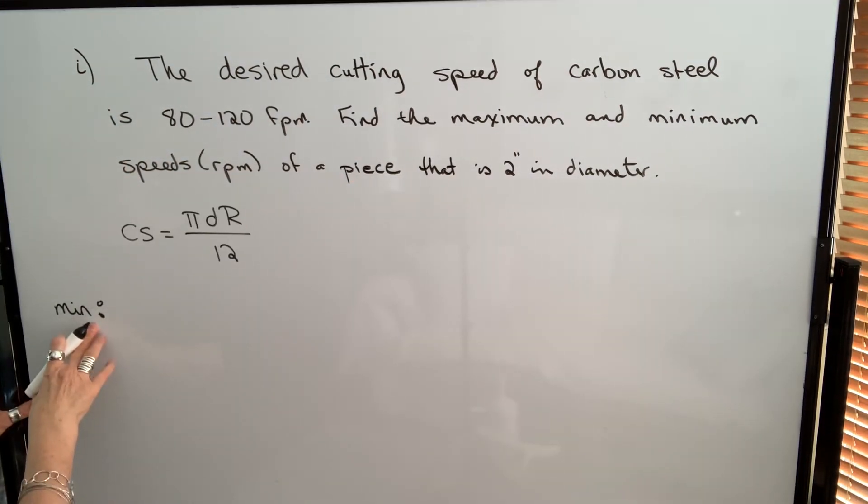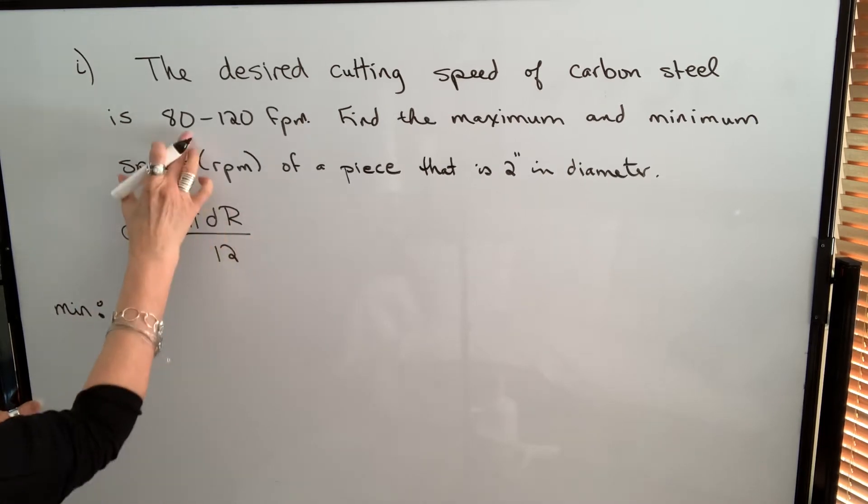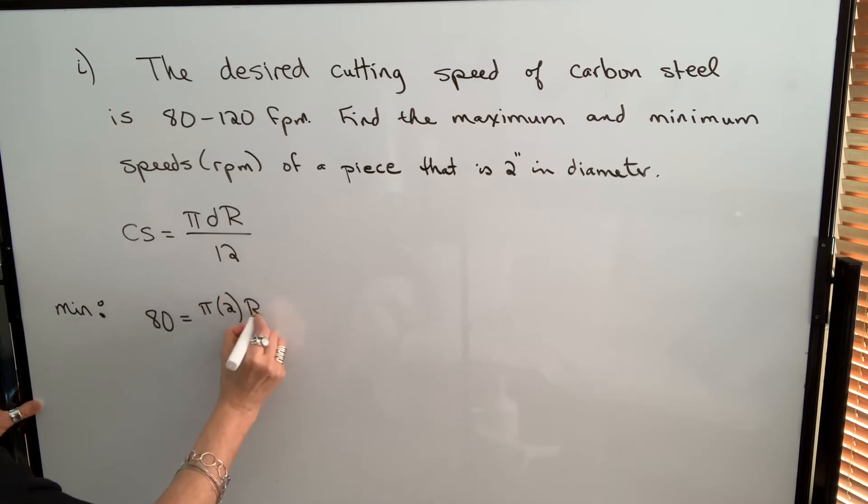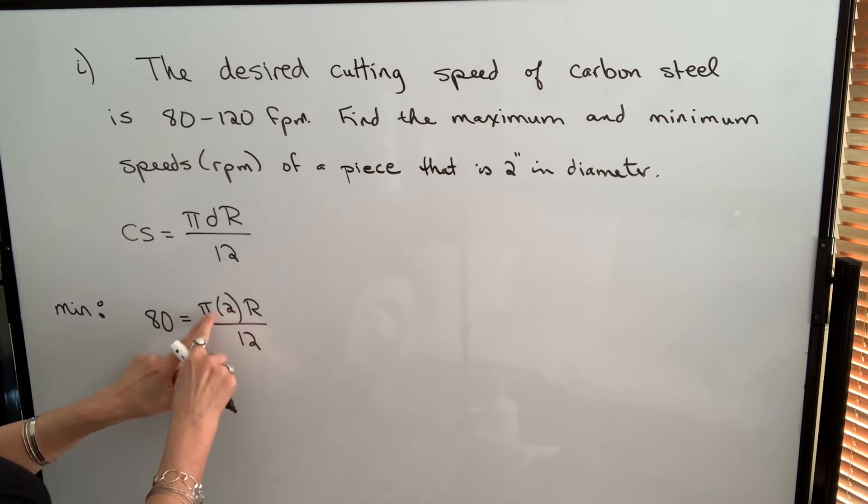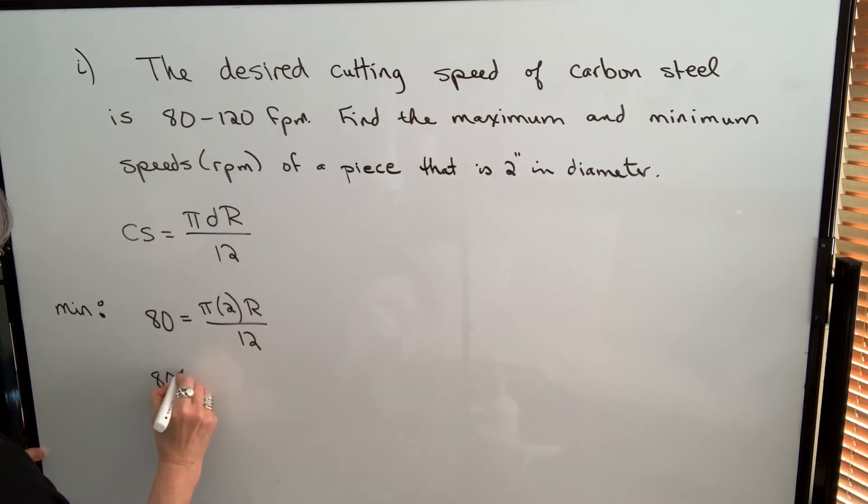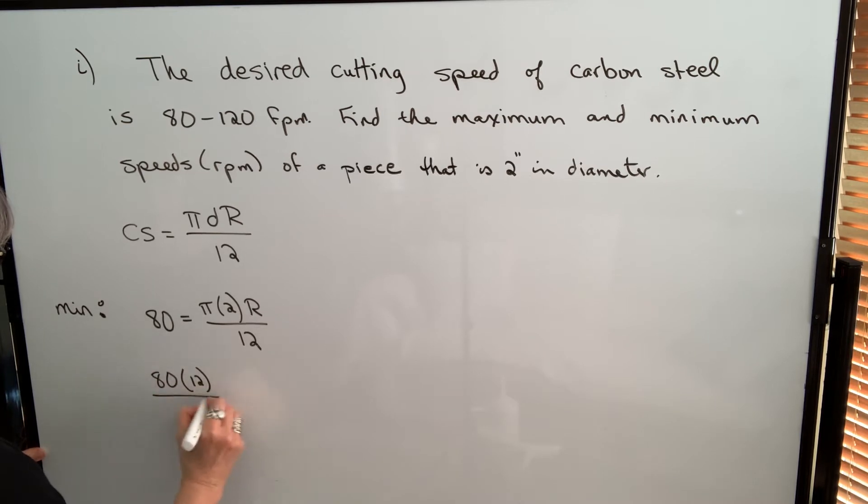So I'm going to start finding the minimum. I'm going to plug 80 into my formula for cutting speed. The diameter is 2, and I'm finding r. So I can either take π times 2 and divide by 12 and get one number here times r, and then isolate r by dividing by that, or the other option is I could take 80, multiply by 12, divide by π, and divide by 2.